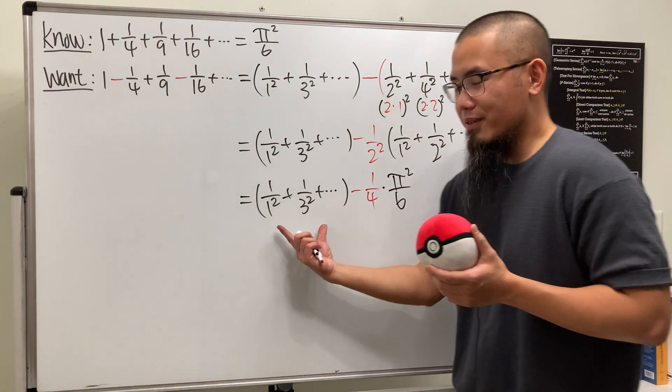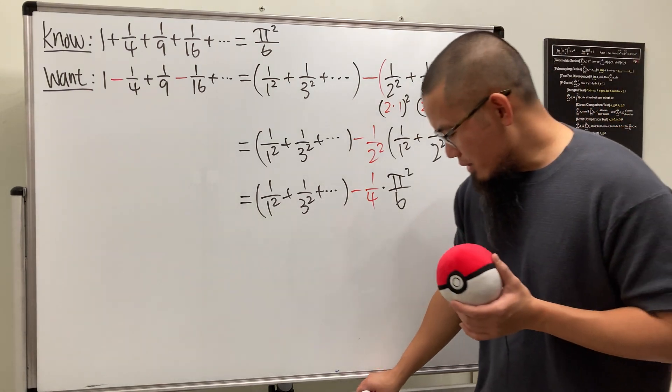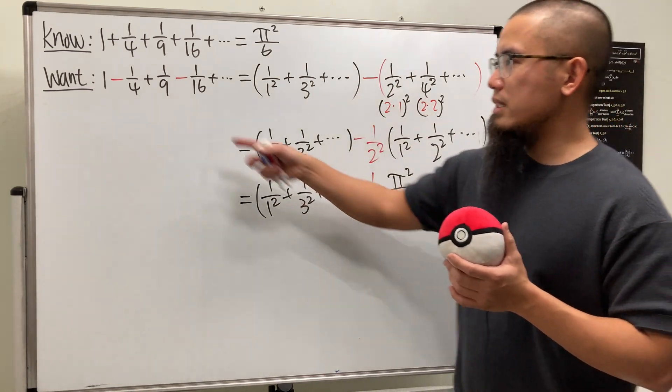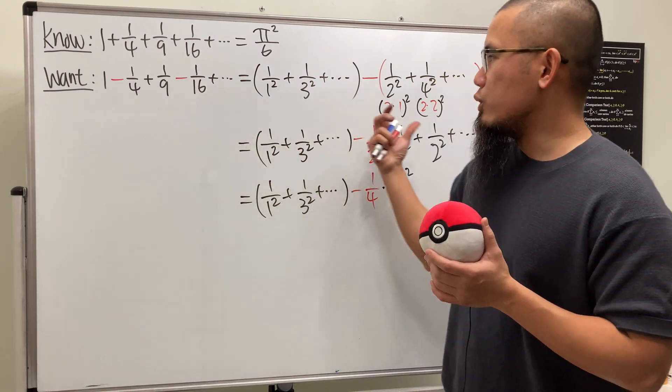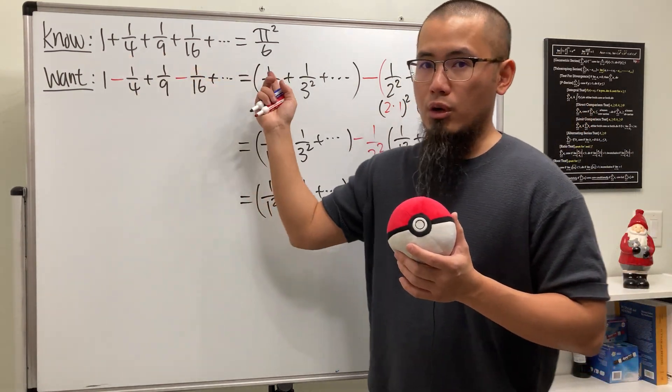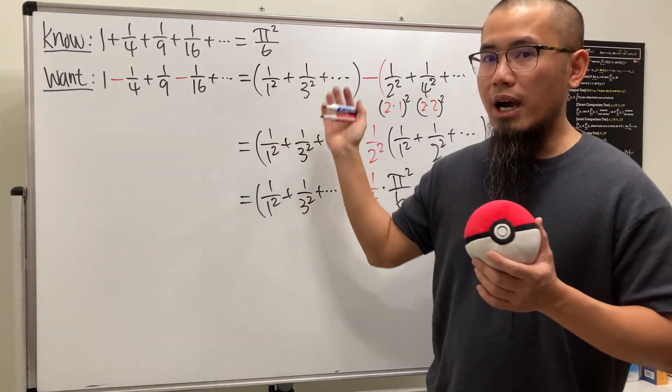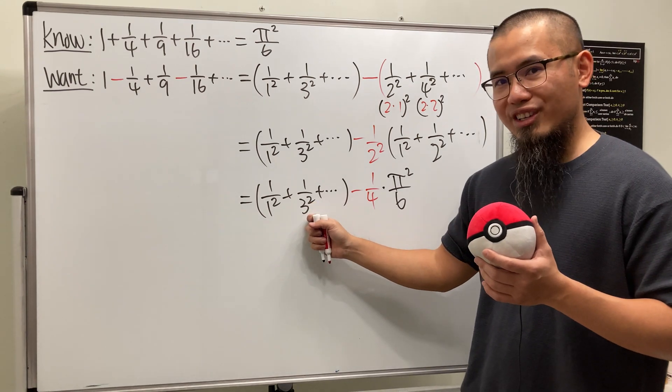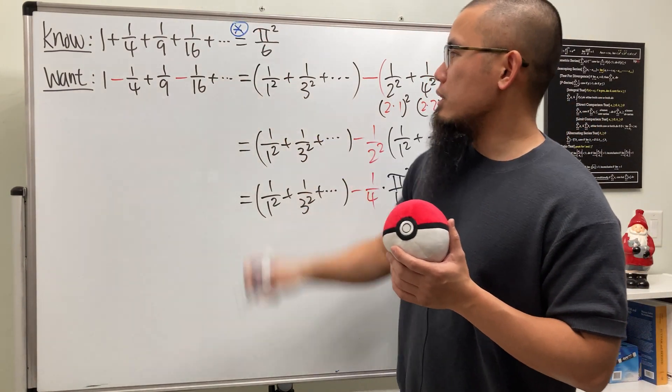But we don't know what the value of this is, though, so we're kind of stuck. But you know what? Don't worry. Because you see, we did this approach with the alternating series, but what if we try the same thing with the original? Well, you see that we have an equation here. If we try the same approach, we can actually solve for this right here. So have a look. Look at the original series.